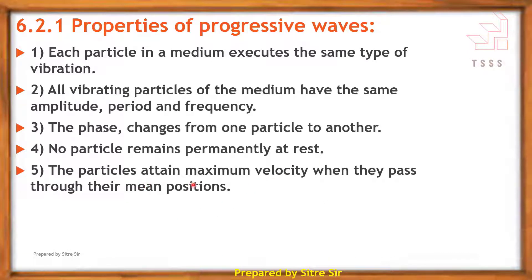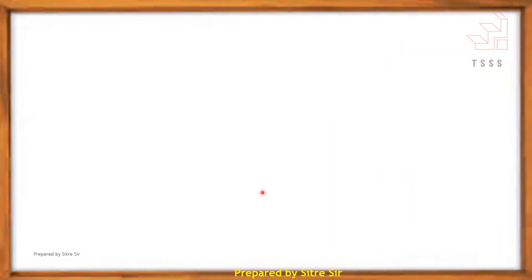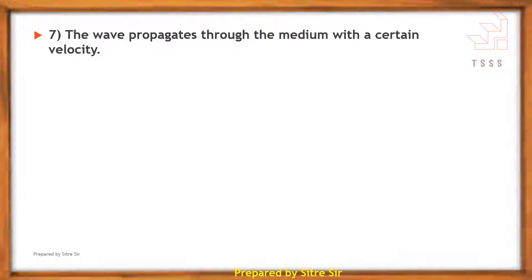All particles are doing oscillatory or vibratory motion about their mean position. The particles attain maximum velocity when they pass through their mean positions; at the extreme position, the velocity is minimum. The wave propagates through the medium with a certain velocity.